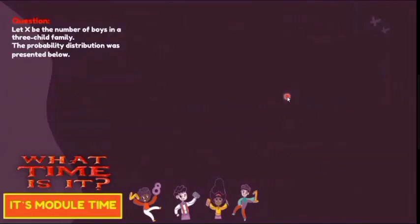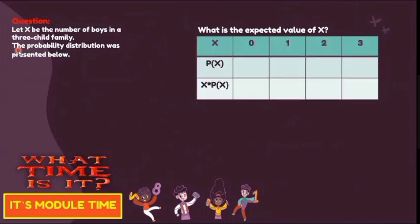For question number 2: let x be the number of boys in a 3-child family. The probability distribution is presented below. What is the expected value of x? You need to find the mean, since the mean is equal to the expected value. Use the given table and map for this problem.